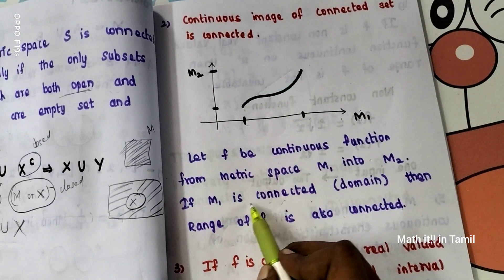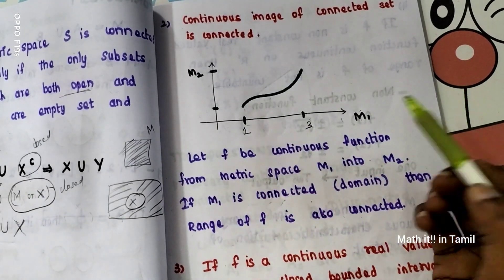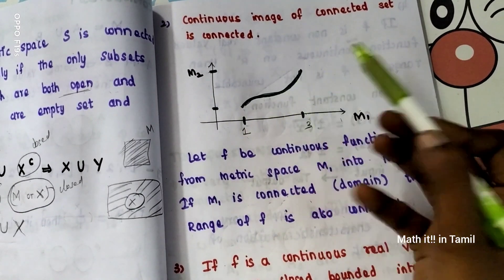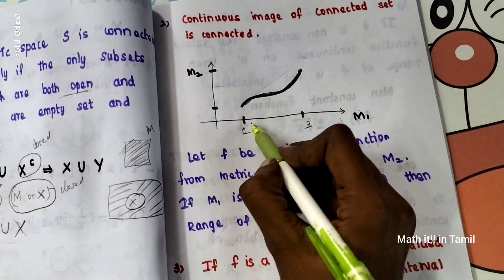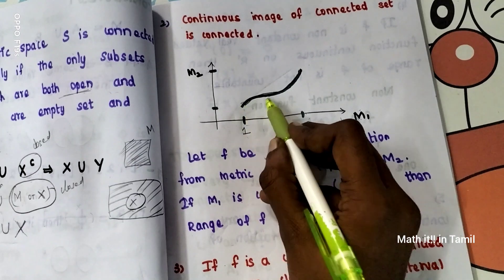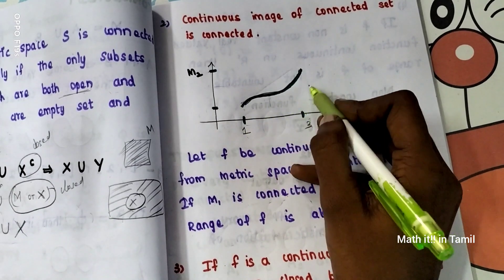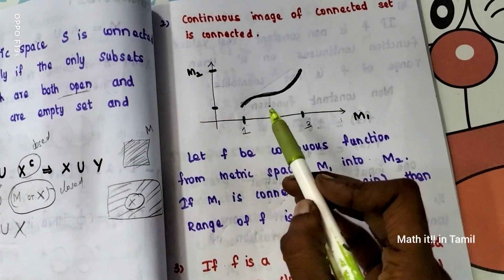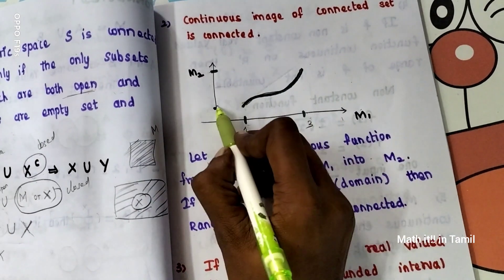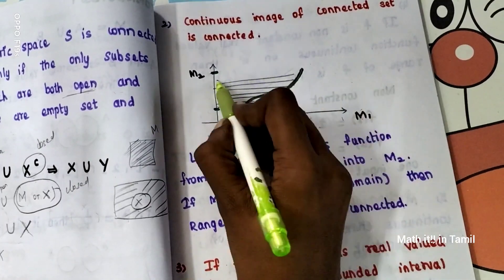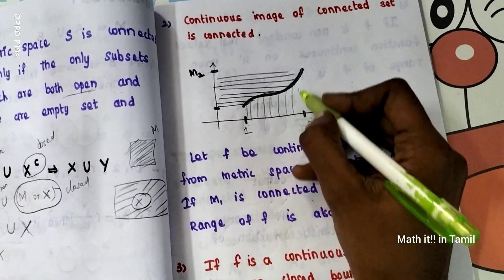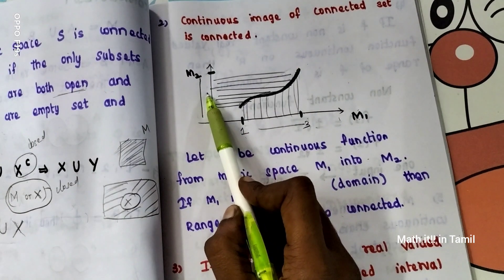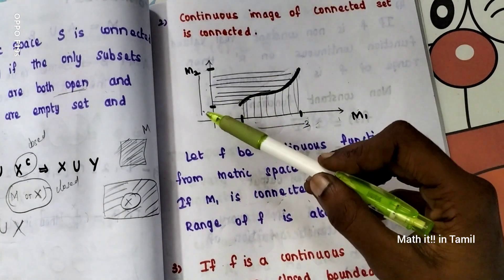Now M1 contains values like 1, 2, 3. We have some continuous function graphed. Since M1 is connected, with values from 1 to 3, the graph here is M2 — the map of y-axis points. If x is the input value, f(x) is the y output. So this is connected: the domain being connected implies the range and co-domain are connected.